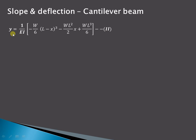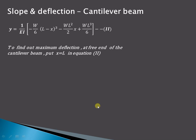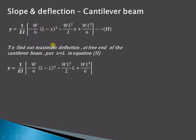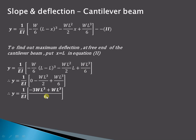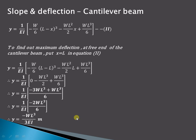Similarly, considering the deflection equation, maximum deflection occurs at the free end where x equals L. Substituting x equal to L: the (L minus x)³ term becomes 0, leaving minus WL²/2·L plus WL³/6, which equals minus WL³/2 plus WL³/6. Taking 6 as the LCM: (minus 3WL³ plus WL³)/6 equals minus 2WL³/6, so the maximum deflection is minus WL³/3EI for the cantilever beam.